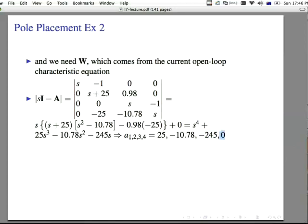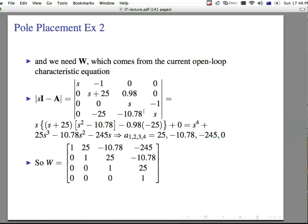Notice that you have as many a's as you do the size of your system. So w here is equal to 1 down the diagonal, and then we write from a1 out to as far as we can write to fill the system out. So we got 25, minus 10.78, 245, so 25, minus 10.78, minus 245. Next one is 25, minus 10.78, well we run out of space so we don't write anything else down. Next one is 25, and we're done. Zeroes on the lower triangle.